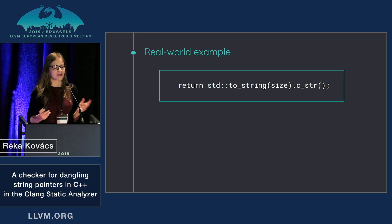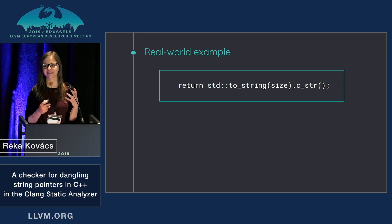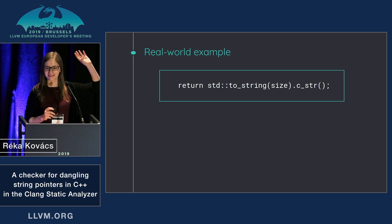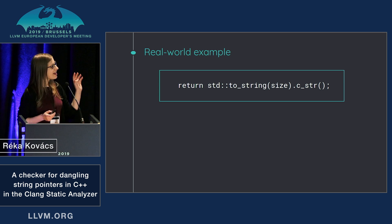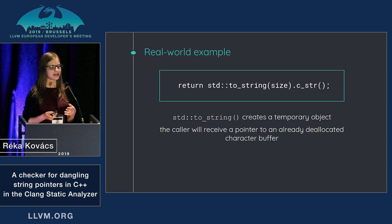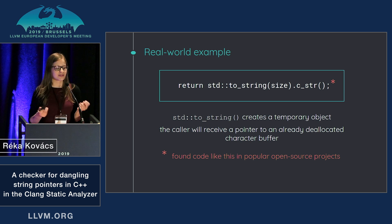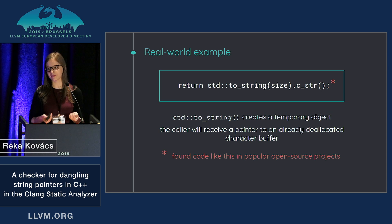To start with a small example to illustrate the problem that I was looking for in code, let me just be a bit interactive. Could you please raise your hands if you've seen code like this? And have you written code like this? It's pretty easy to get wrong. The problem here is that std::to_string returns a string by value, so here we are returning a pointer that points to the inner buffer of a temporary string. It's pretty easy to get wrong, as the checker found code like this in quite popular open source projects.